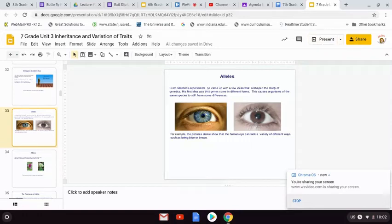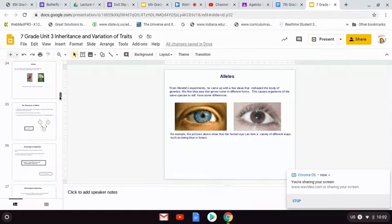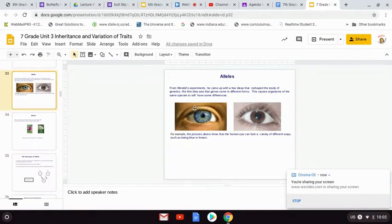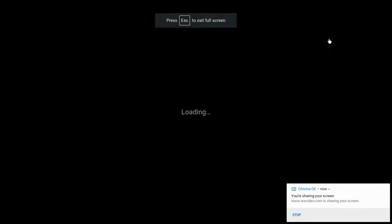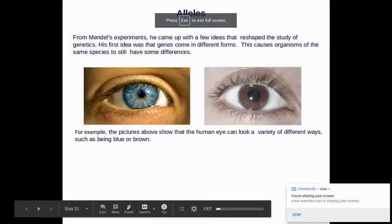We're going to be covering slides, I think it's like 33 to 45, something around that. We are going to be talking about some new vocabulary words that have to do with genetics. So for the most part, this is going to be memorizing some new vocabulary words.